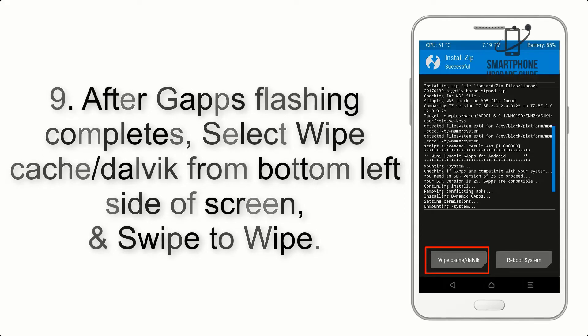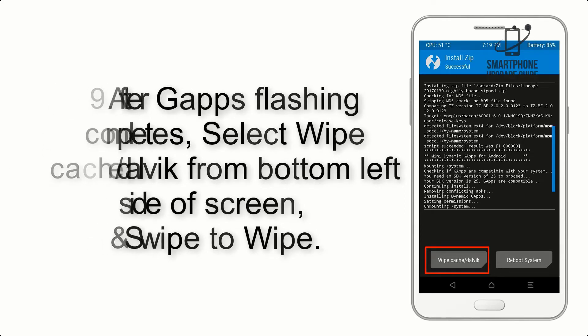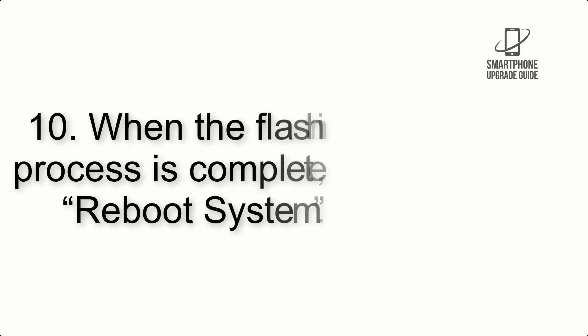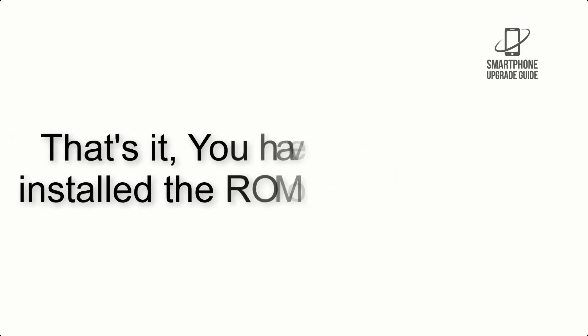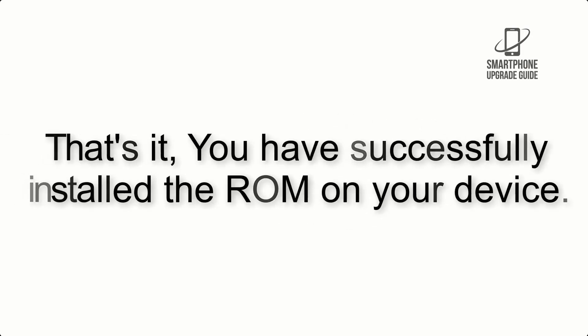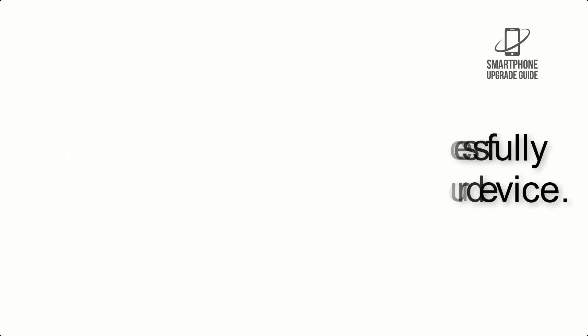Step 9: After GApps flashing completes, select Wipe Cache and Dalvik from the bottom left side of the screen and swipe to wipe. Step 10: When the flashing process is complete, hit Reboot System. That's it — you have successfully installed the ROM on your device.